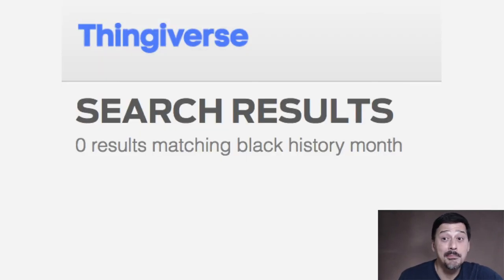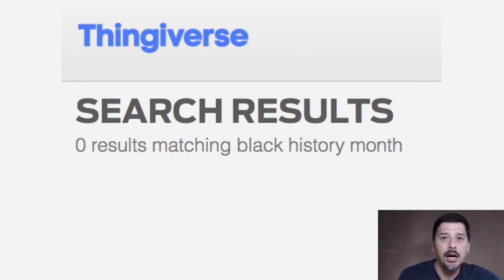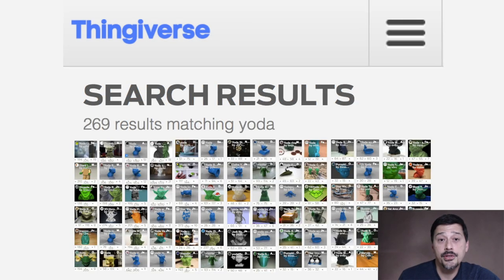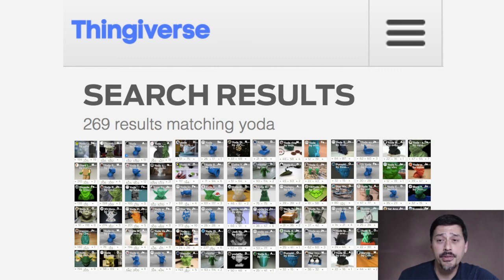The next month was Black History Month, so I wanted to 3D print something. I did a search and found zero things. I searched for black history, African-American history, a lot of different keywords, but wasn't able to find anything. That seemed odd — maybe search on Thingiverse was broken. So I searched for Yoda and found 269 results. Zero things for black history, 269 results for 3D printable Yodas.